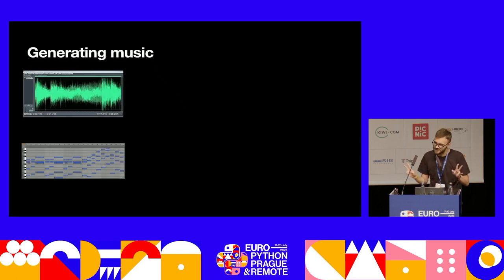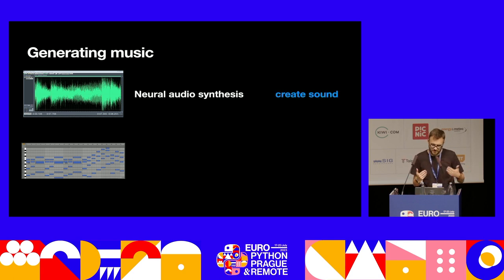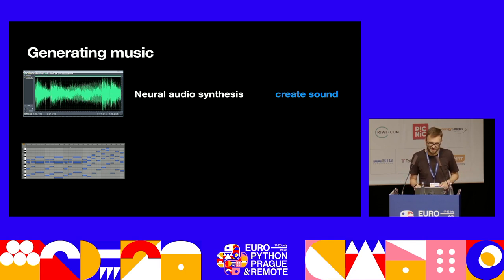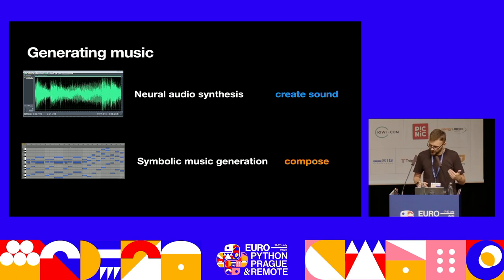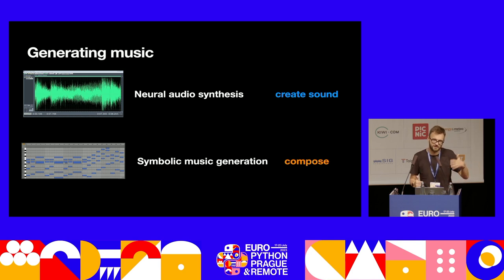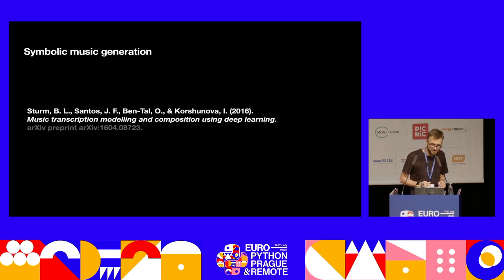Again, we've got two settings: audio or symbolic music. In terms of audio, we will be talking about neural audio synthesis, which is a fancy term for generating audio. And for symbolic music generation, what we will be doing is composing music using AI and leaving the rendering and creating the actual sound to someone else. Let's take a look at symbolic music generation first, because it's the easier setting.